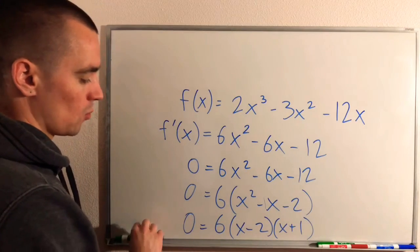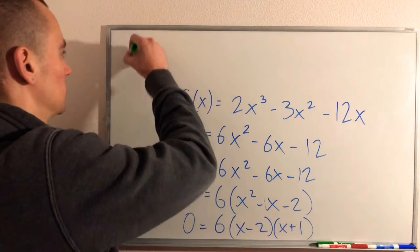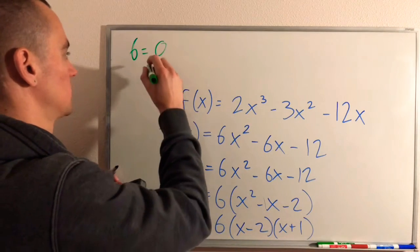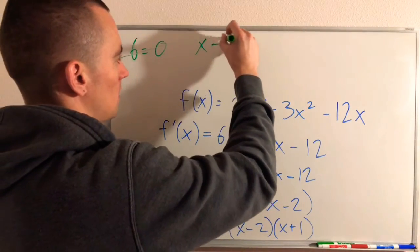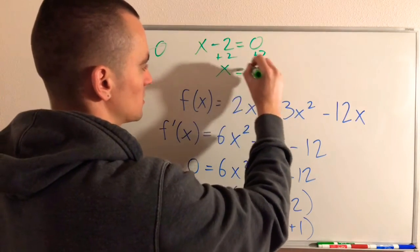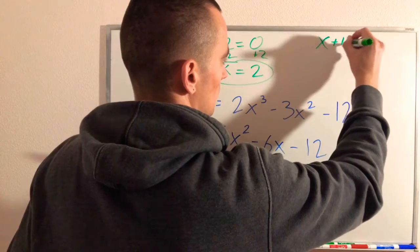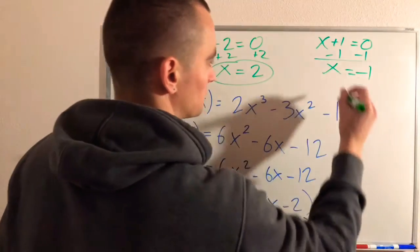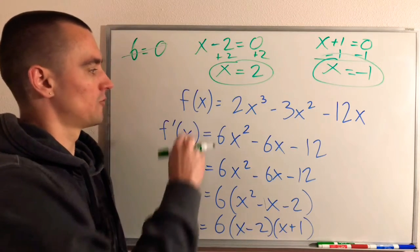To figure out where this equals 0, we take each factor individually and set each of them equal to 0. First, 6 will never equal 0, so that won't give us any critical numbers. Then x minus 2 = 0 — add 2 to both sides — gives us x equals 2, so that's one critical number. And then x plus 1 = 0 — subtract 1 from both sides — gives us x equals negative 1. So x equals negative 1 and x equals 2 are the only two critical numbers for this function.